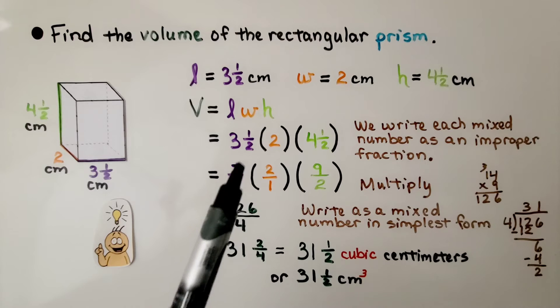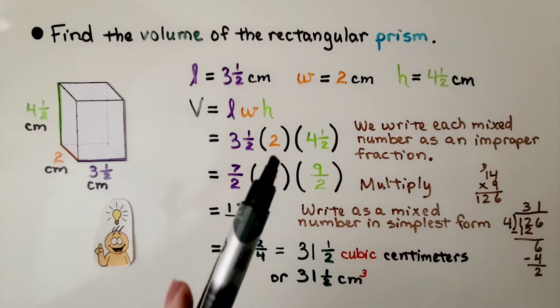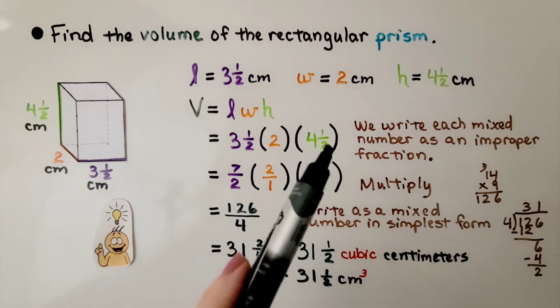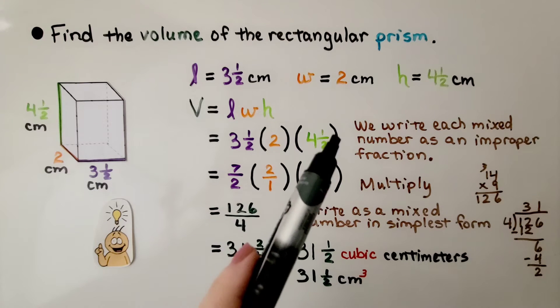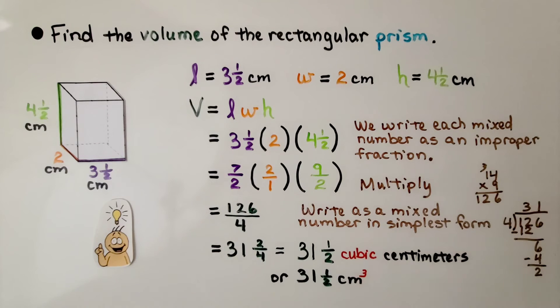We use the two denominator, so we have seven halves. We can write the two as two over one, and for this one we do the four times two plus the one numerator. That's nine, and we use that denominator. We have nine halves.